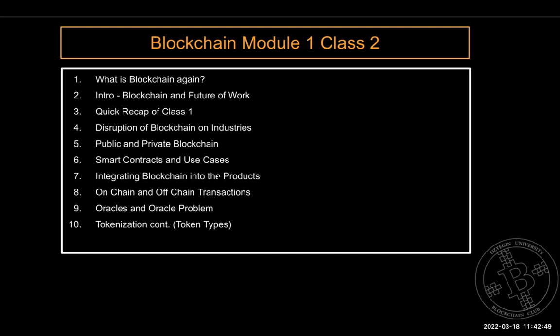You learned about the blockchain principles — there were about five or six, like a distributed system, immutability, security, and the speed trade-offs. It's not as fast as a Visa card. Basically, know the advantages, know the disadvantages. When you go to a company and start working as a blockchain product developer or marketer, these are really important things to know intuitively.